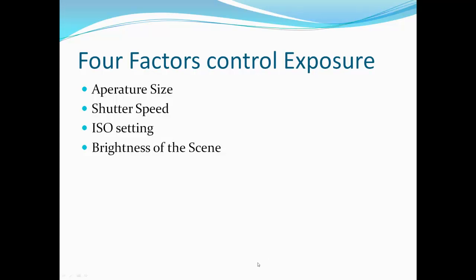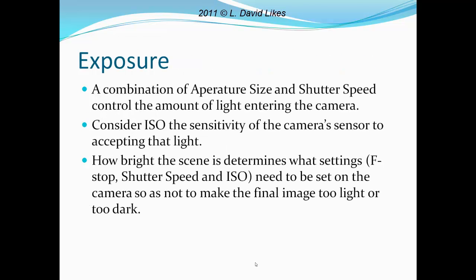The Sunny 16 rule of equivalent exposures. There are four factors to control exposure: aperture size, shutter speed, ISO setting, and brightness of the scene. Basically, exposure is a combination of aperture size and shutter speed, which control the amount of light entering the camera. Consider the ISO — the sensitivity of the camera sensor — to accept that light. The f-stop, shutter speed, and ISO need to be set on the camera so as not to make a final image too light or too dark.